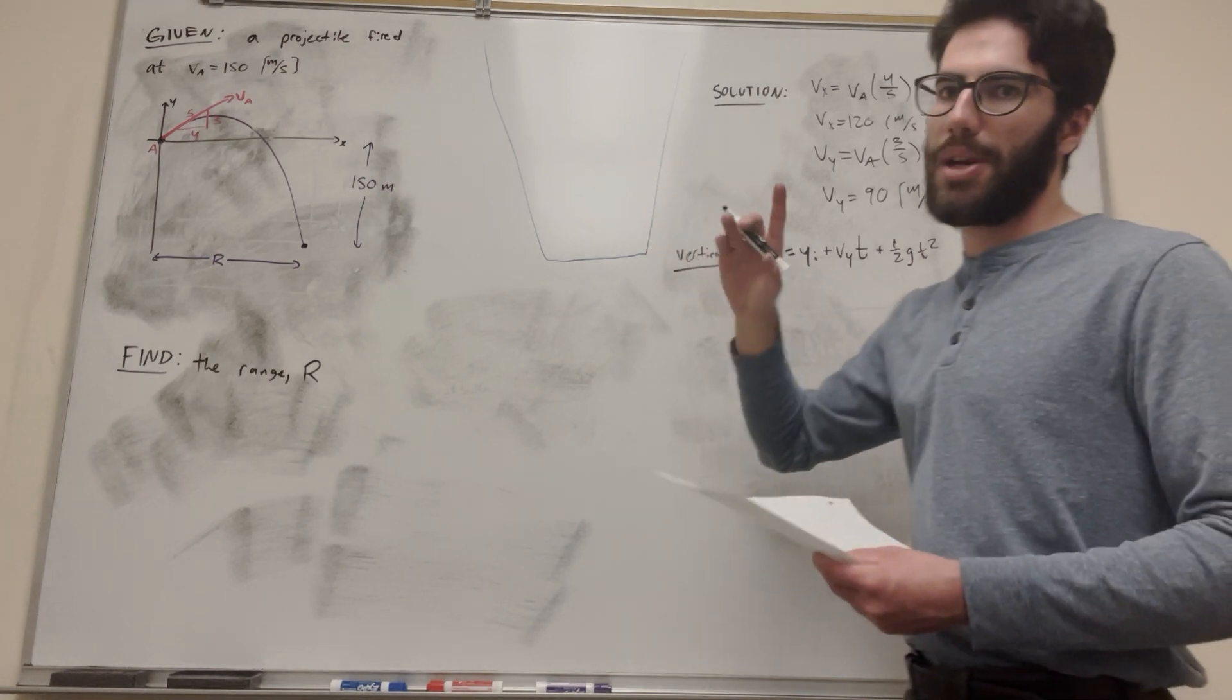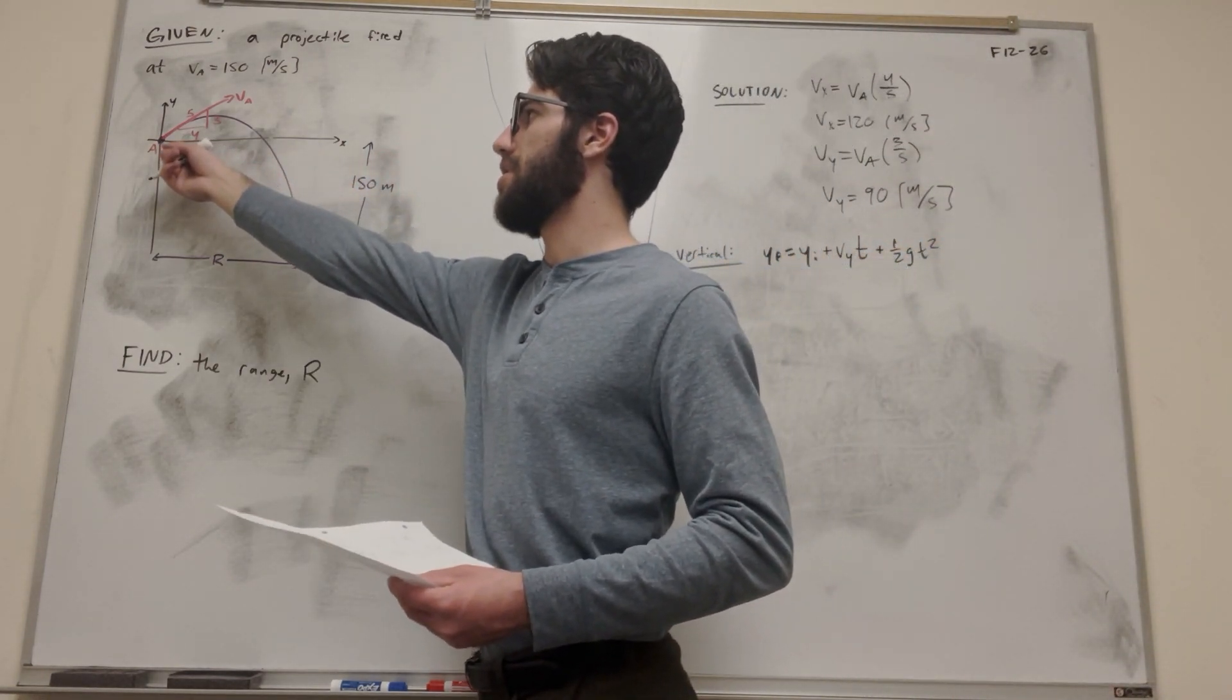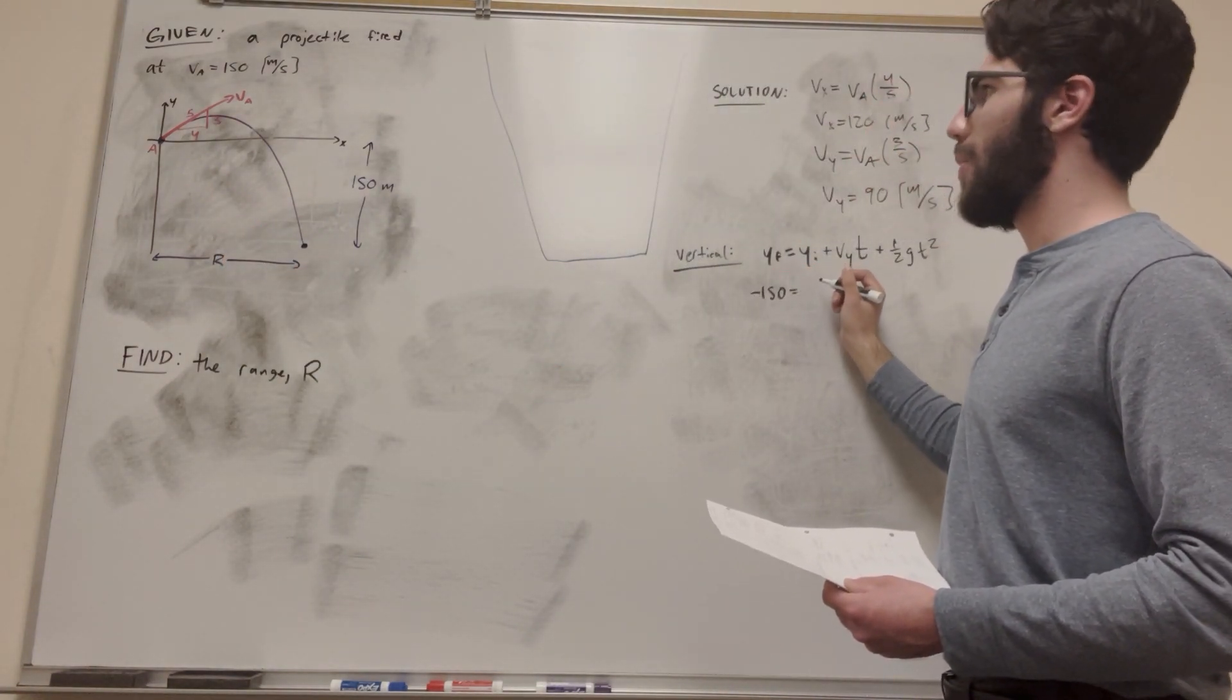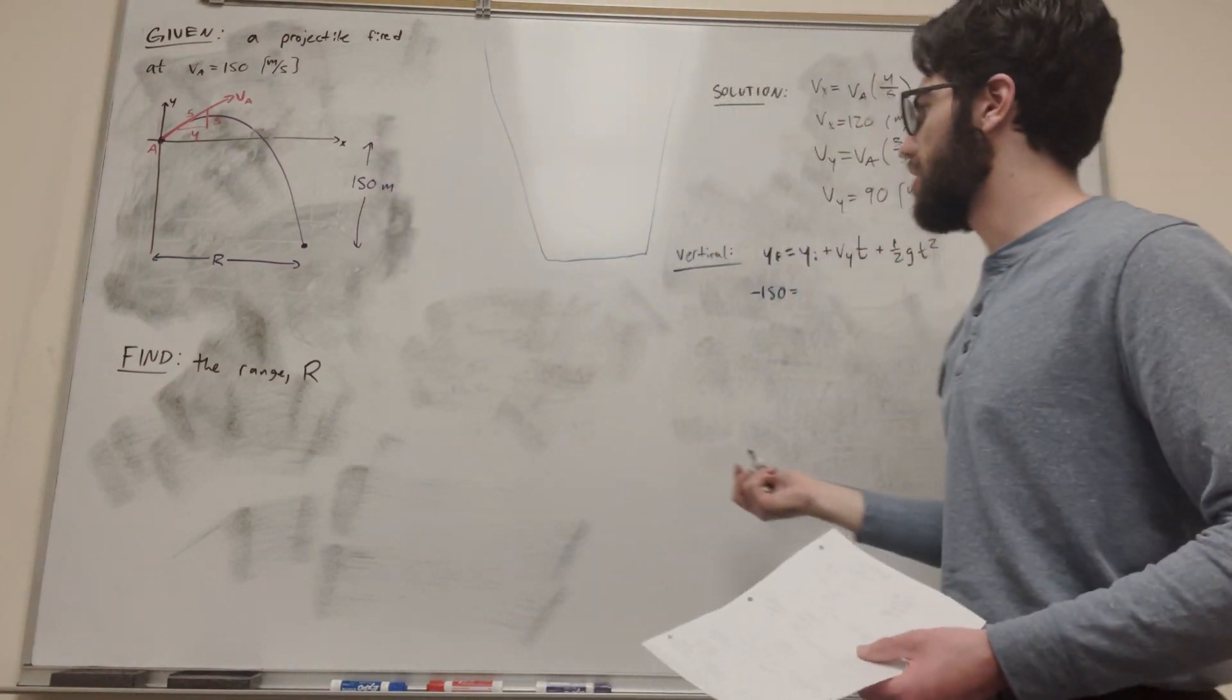So let's go ahead and just plug in everything we know on this equation. So y final, that's going to be our final position. This is going to be negative 150, right? Because we're starting here at zero, and we're going to follow that 150. So it's going to be negative 150 is equal to y initial zero. We're starting at the origin, so we're going to start at zero.